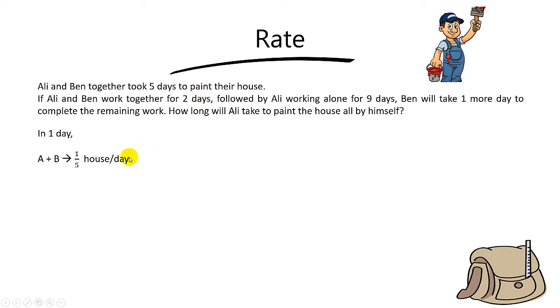So after 2 days, can you tell me how much of the house would they have painted? The answer is simply just 2 fifths, because 2 times 1 fifth you get 2 fifths. And so if they have completed 2 fifths of the house, what is the leftover? The remaining house will be 1 minus 2 out of 5, you get 3 out of 5.